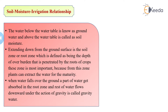We had already discussed and gained some idea about the soil moisture irrigation relationship from the image. Let's discuss further — what are the other components included in the soil moisture irrigation relationship. Water below the water table is known as ground water, and water above the water table is known as soil moisture. Extending down from the ground surface is the soil zone or root zone — the depth through which water can be extracted by the roots of the plant.